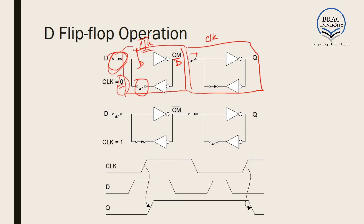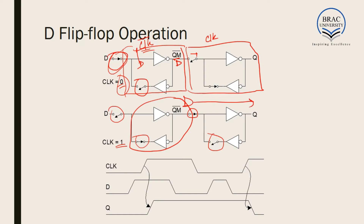Since the clock is zero, no signal can pass to the output, so if we change D, the output will not change. When the clock transitions from zero to one — the positive edge — the first latch opens up and the second closes, holding its original value. Then the second latch closes and its switch opens, transferring that stored value to the output.